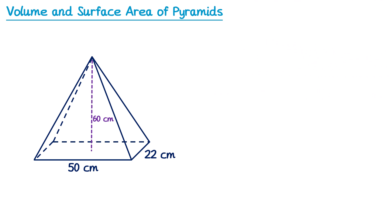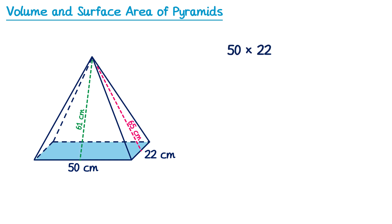For the surface area, we don't need the perpendicular height, but we do need the lengths from the top of the pyramid to the middle of the sides of the base — this length here and also this length here. Notice they're different this time because the triangular faces are not all the same size. We'll start with the area of the rectangular base: 50 times 22 gives 1100.